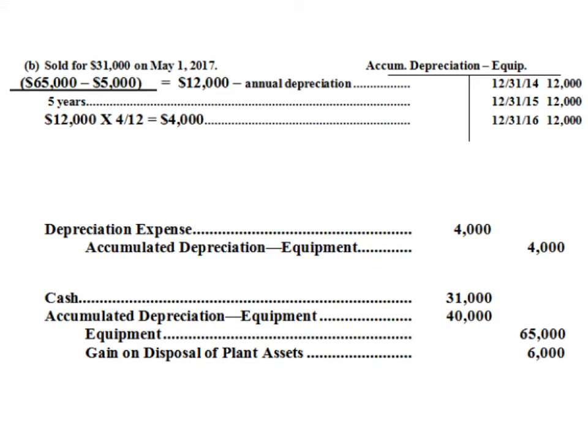We sold equipment on May 1st, 2017. The cost is $65,000, salvage value is $5,000, and a five-year useful life, giving us $12,000 annual depreciation. But remember to double-check your dates.